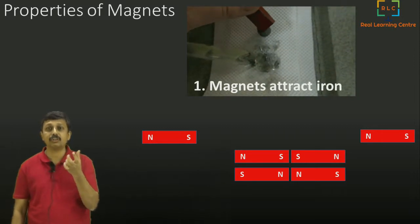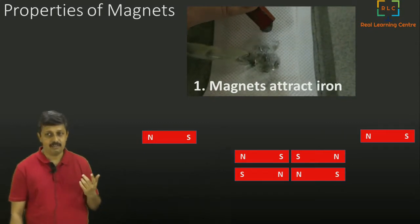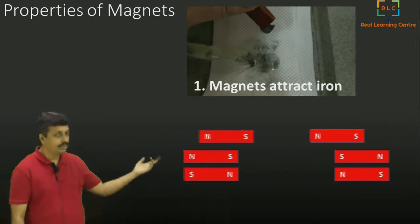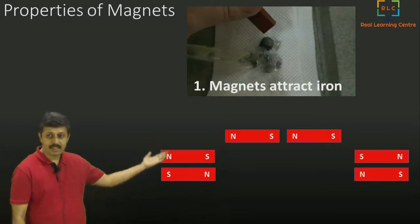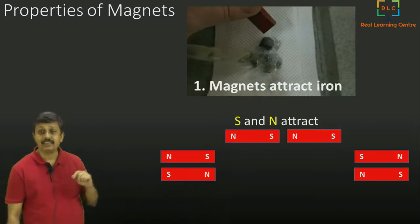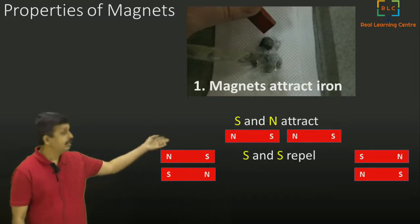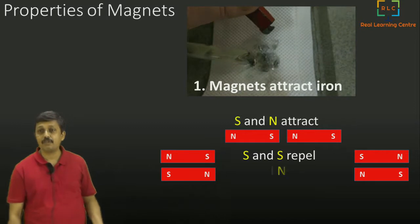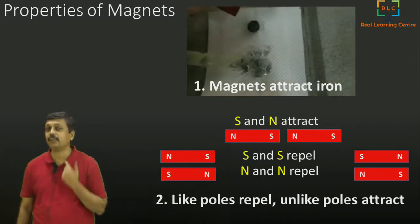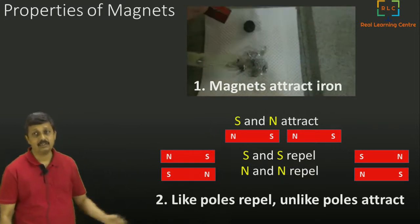The second property: if you take two magnets, they have two poles — north pole and south pole. If you bring them near each other, the south and north poles attract, while south and south repel, and north and north repel. To summarize: like poles repel and unlike poles — like north and south — attract. This is the important second property of a magnet.